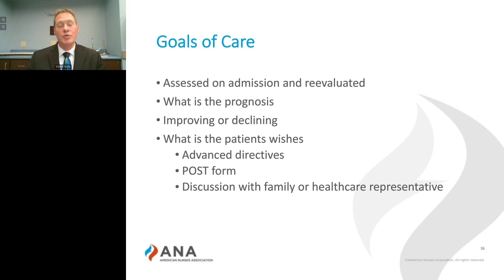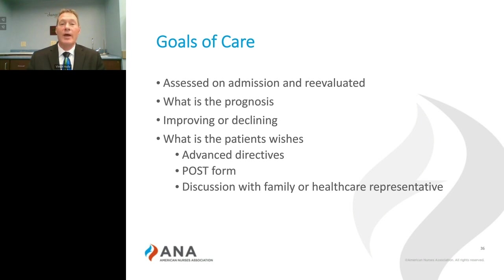Sometimes the patient's wishes are overshadowed by emotions and the desire of the family. Although we need to be sensitive to the family's mental and emotional state of mind, we need to be an advocate for the patient. Does the patient make their wishes well known? Do they have advanced directives? Do they have a POST form?